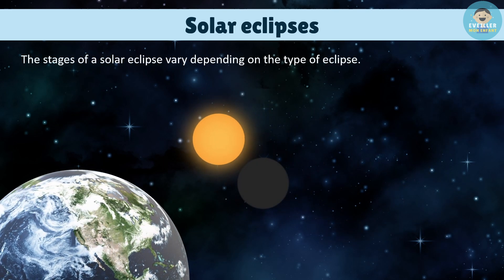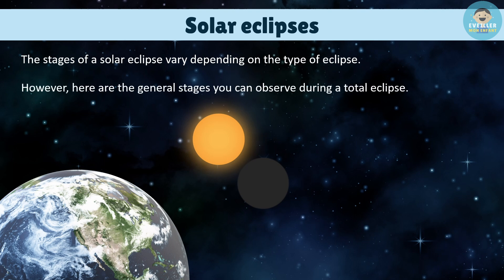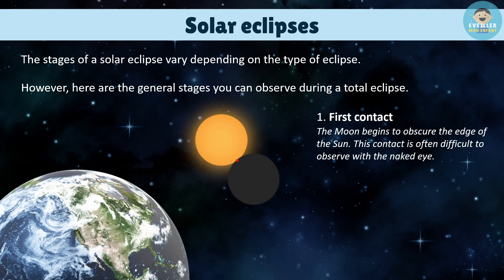The stages of a solar eclipse vary depending on the type of eclipse. However, here are the general stages you can observe during a total eclipse. First contact: the Moon begins to obscure the edge of the Sun. This contact is often difficult to observe with the naked eye.